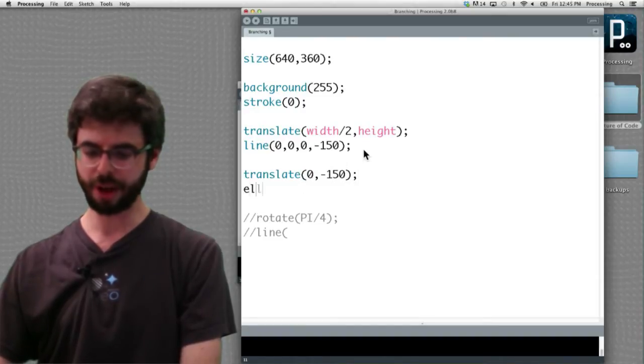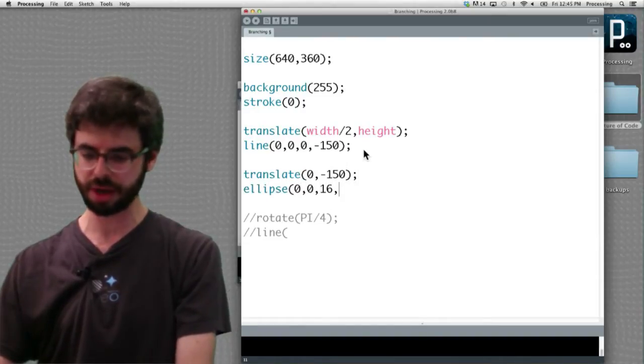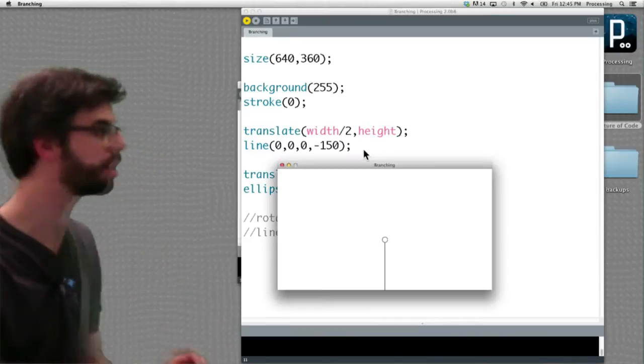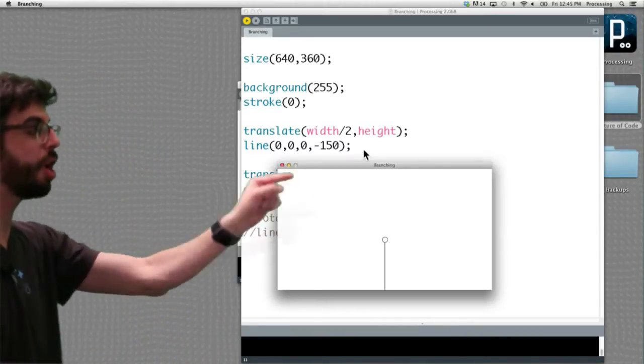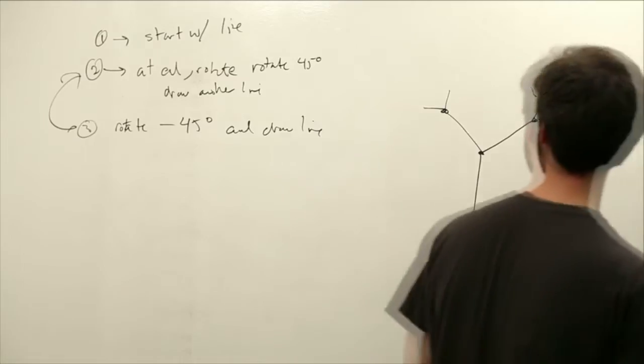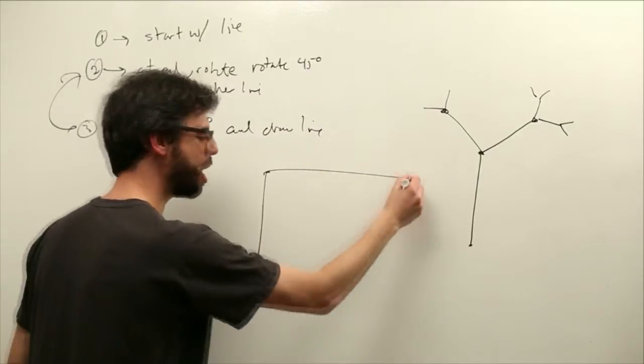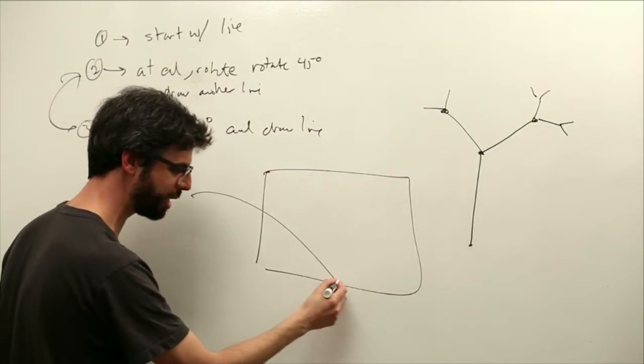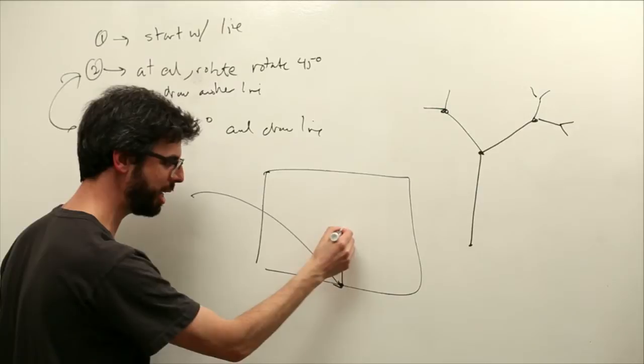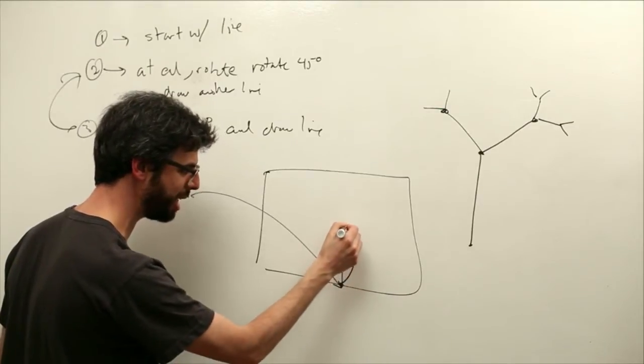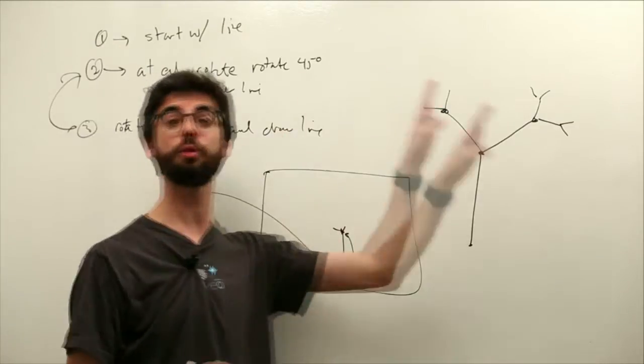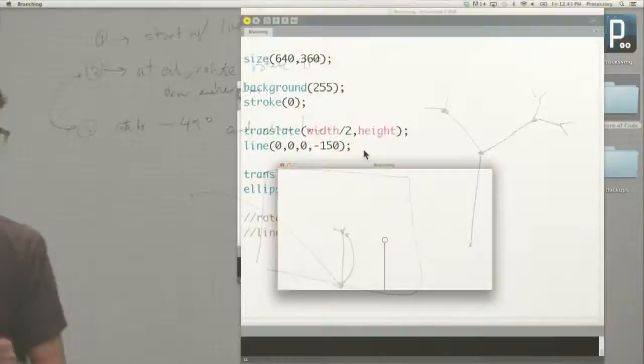So I'm going to say, let me translate from 0, negative 50. Now, if I were to draw a little circle at 0, 0, where is that little circle? It's at the top. Just to be clear here, this is our processing window. The first thing we did was translate to the bottom, then draw a line here. Then what we did is translate to here. The reason why we're doing that is now we're going to rotate, draw a line, rotate, draw a line.